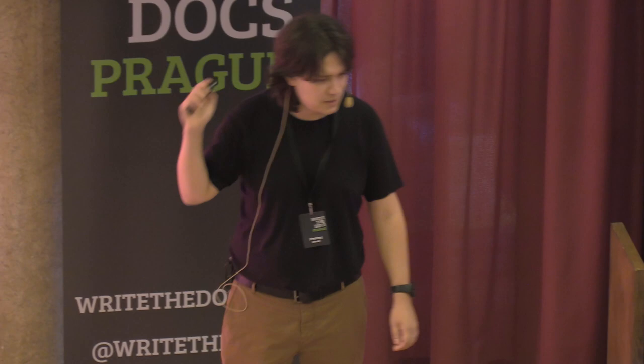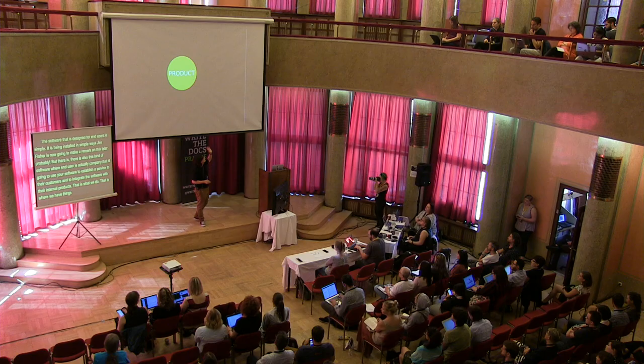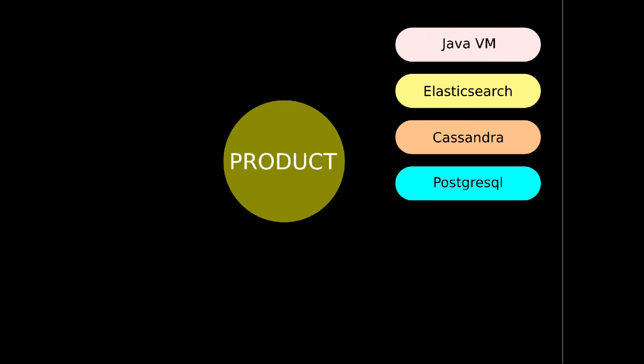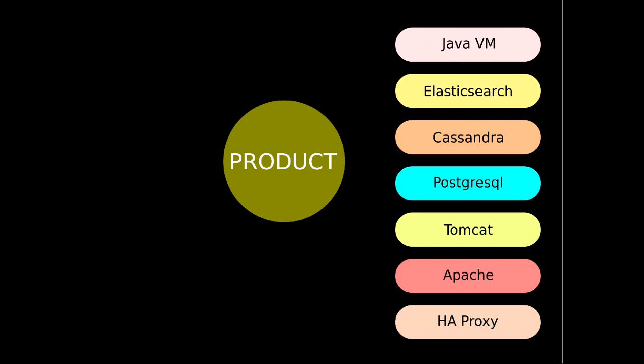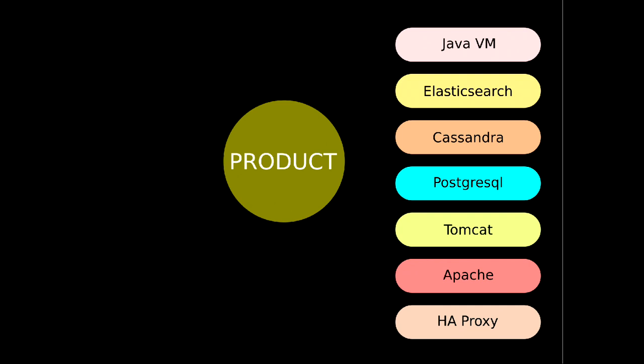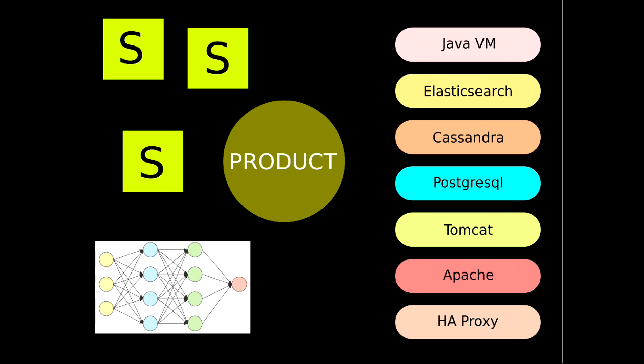And that's what we do. That's where we have a main product that relies on a bunch of third-party dependencies and services like Java Virtual Machine, Elastic Search, Cassandra, PostgreSQL, Tomcat, Apache, HAProxy. Imagine having to get the package for each one of these, set them up, configure so they work together. We also had machine learning models and a bunch of additional services built in-house that work with our product.